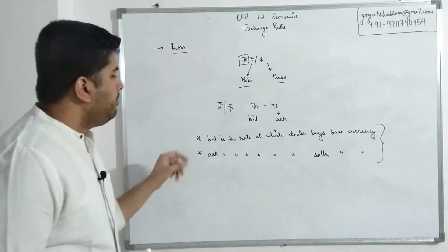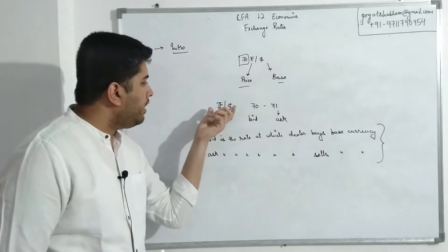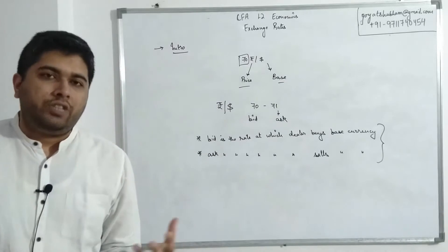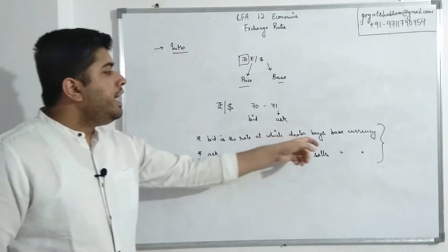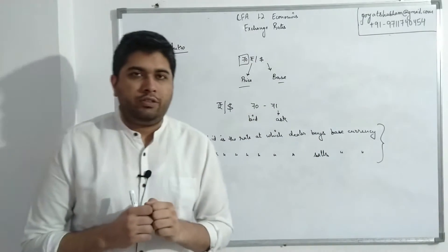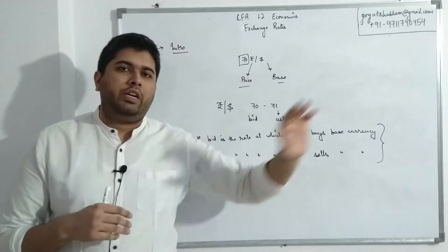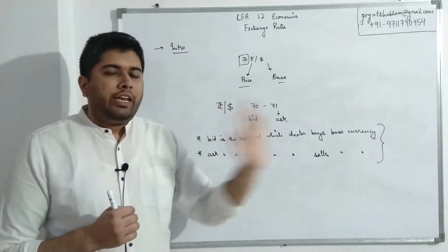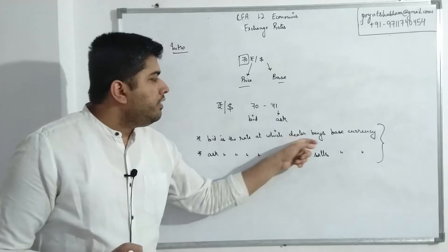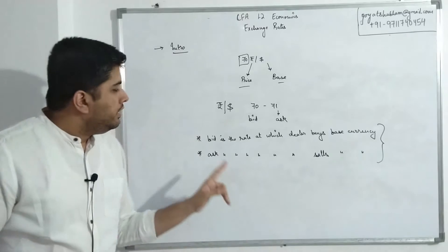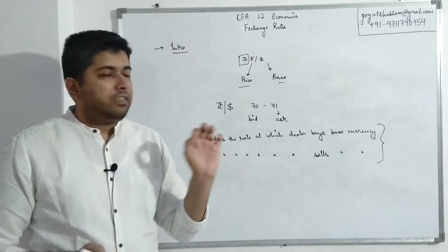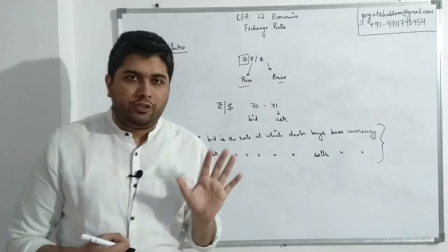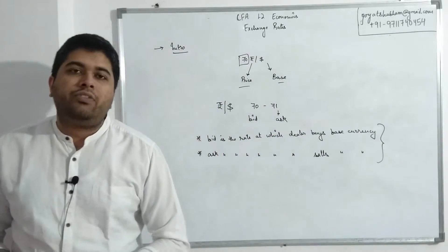Let's look at this rule one more time. Bid — 70 — is the exchange rate the dealer will use when buying dollars. So if you have dollars and want to sell them, the dealer is the counterparty buying. The dealer will buy the base currency at the bid rate. Similarly, when the dealer has to sell dollars — when an investor wants to purchase dollars — the dealer will sell dollars at the ask rate of 71.